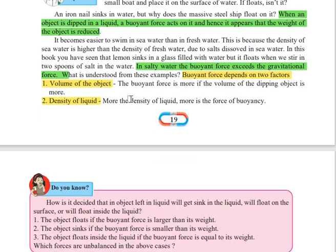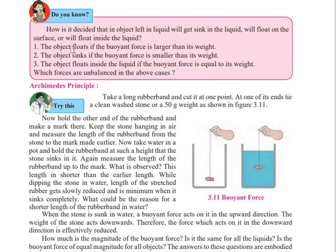तो जितना ज़्यादा volume रहेगा उतना ज़्यादा buoyant force लगेगा। तो दो factors हैं जिन पर buoyant force depend करता है: पहला volume of the object — अगर volume ज़्यादा है तो buoyant force भी ज़्यादा रहेगा। जो second factor है वो है density of liquid — अगर liquid ज़्यादा dense है तो उस पर buoyant force ज़्यादा लगेगा। इसीलिए जब हम sea water के अंदर swim करते हैं तो बहुत आसानी से swim कर सकते हैं, लेकिन fresh water में आसानी से नहीं कर सकते, क्योंकि sea water की density ज़्यादा है than that of fresh water।